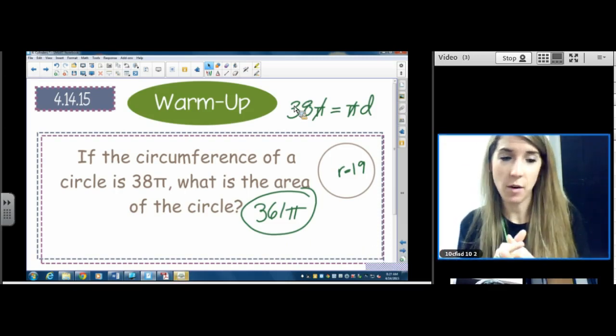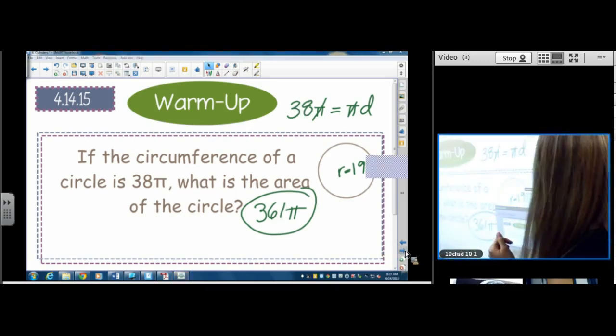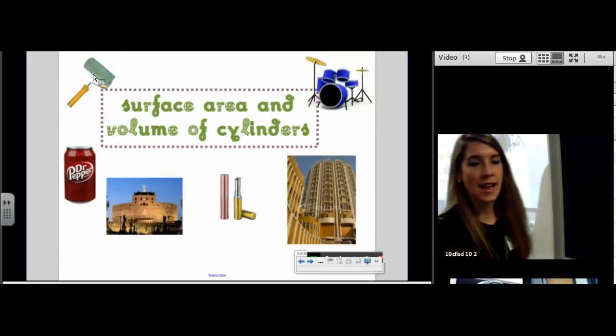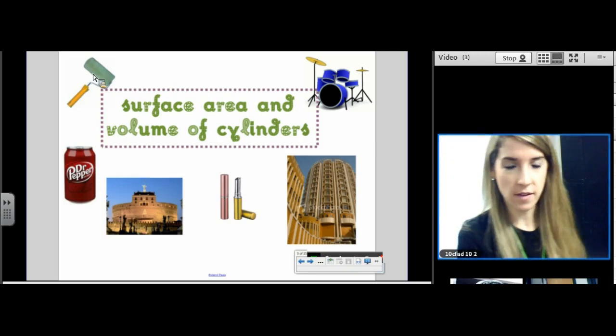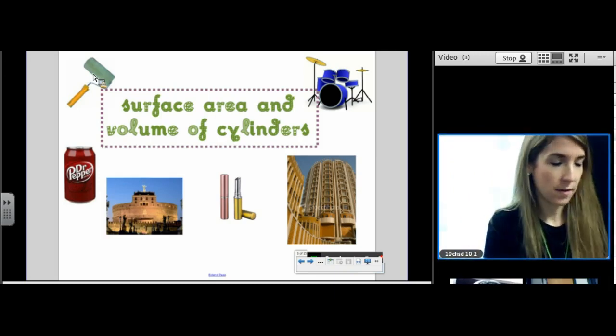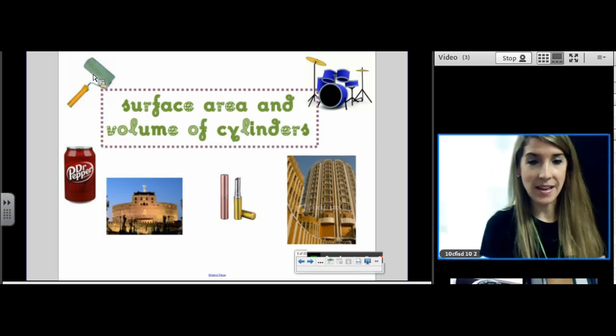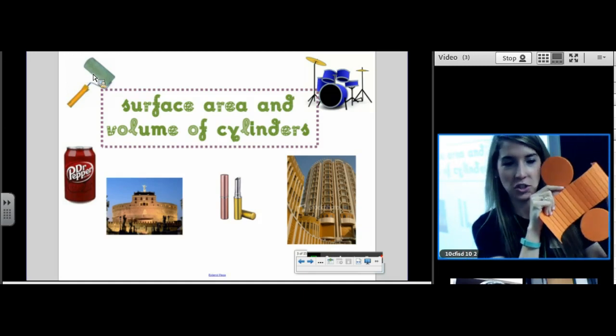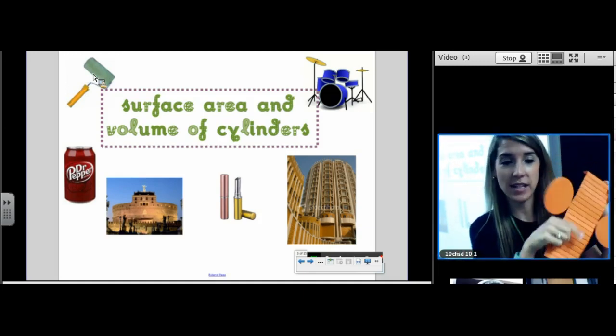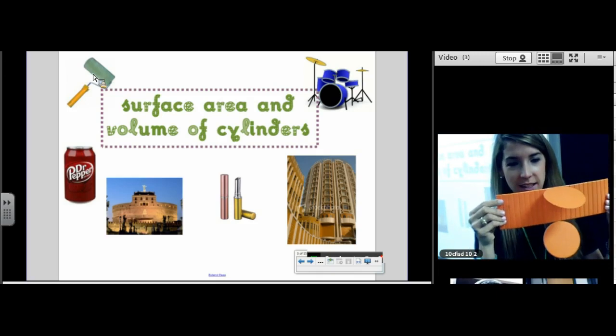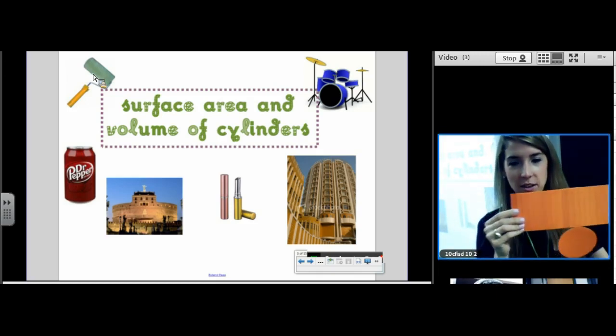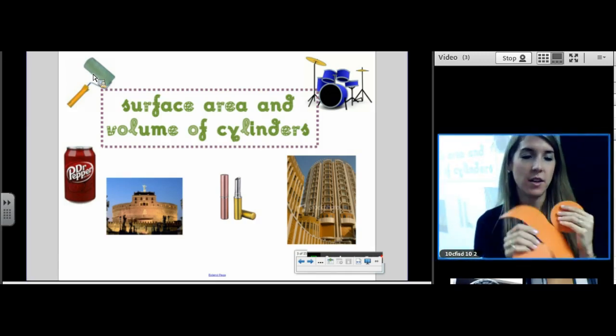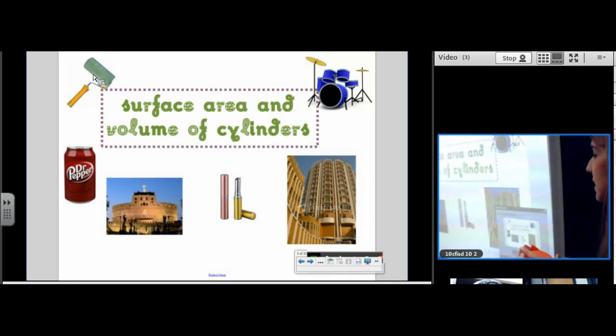There's no homework to check because we didn't have homework last night, so you've got a break from that for a night. So let's dive right into the lesson. It's going to be short and sweet. You'll have time to do tonight's homework in class. Hopefully you won't have any homework at all. Surface area and volume of cylinders. So let's talk about the net of a cylinder first. So what is the net of a cylinder made up of? It is made up of two congruent circles and one rectangle. So two congruent circles and one rectangle is the net of a cylinder.